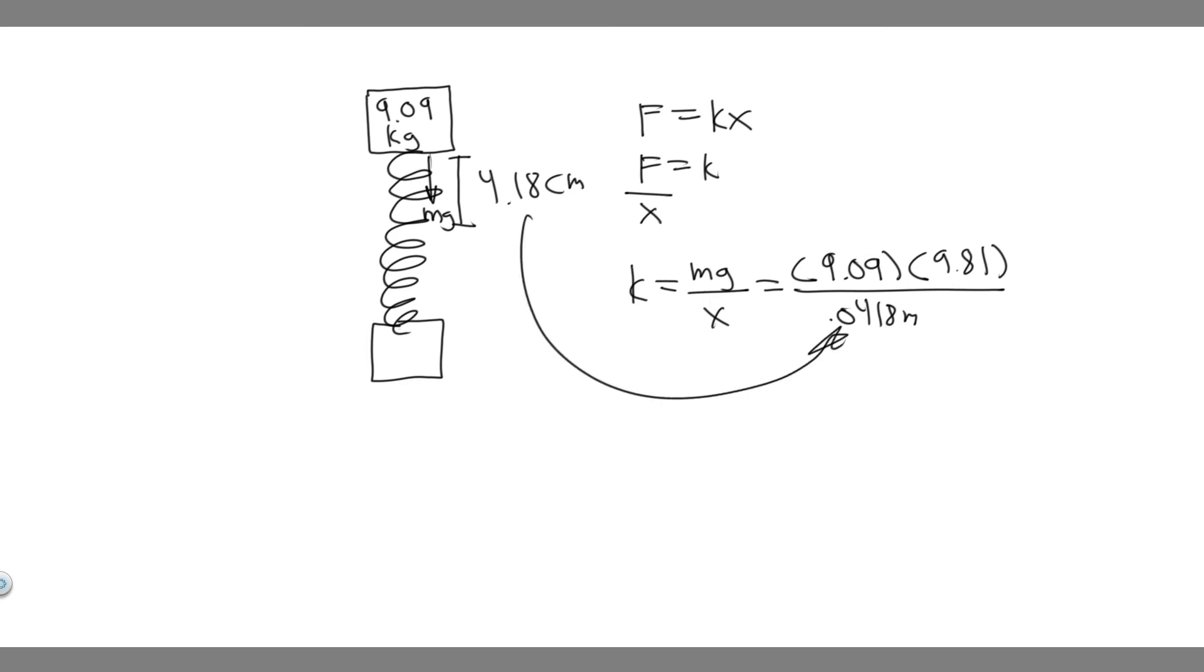If you go ahead and do this, you do 9.09 times 9.81 and divide by 0.0418. You're going to get K equals 2,133.322 and so on.